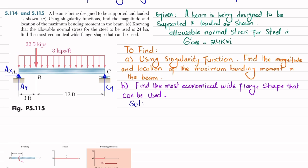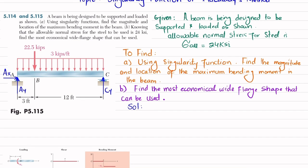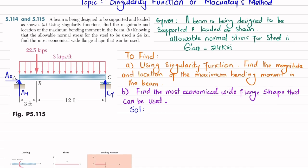First, we will convert the distributed load into a point load. We multiply the load, 3 kips per feet, by the total length, which is 12 plus 3 equals 15, giving 45 kips. Now we apply the equation of equilibrium: the sum of all moments about point C equals zero, taking counterclockwise moment as positive.